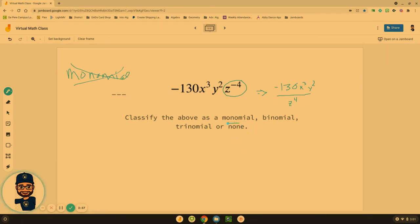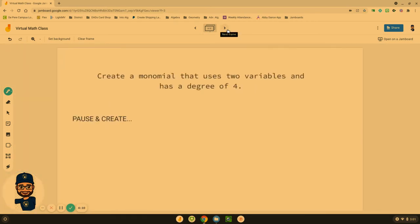One of the rules that we said for polynomials is that we cannot have variables in the denominator. So this one is none. If you have a negative exponent on a variable, or it's in the denominator, it would be none.